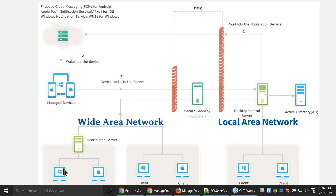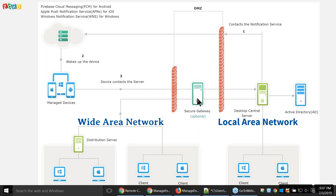Roaming users who move from one location to another can also be managed by Desktop Central. To achieve this, you need to enable NAT (network address translation) on your network, or place your Desktop Central server in a demilitarized zone (DMZ). If you do not wish to host the server in DMZ directly, you can utilize the optional component called Secure Gateway. The Secure Gateway server acts as a proxy between the WAN and roaming agents and the Desktop Central server, ensuring that all communication is secure at all times.